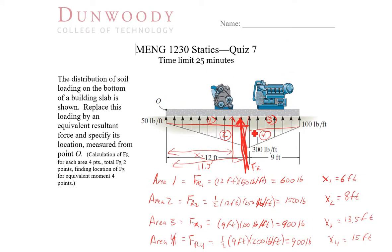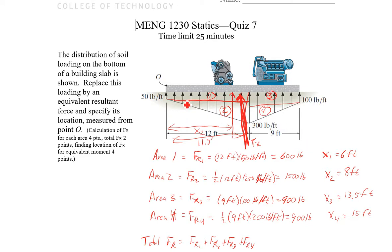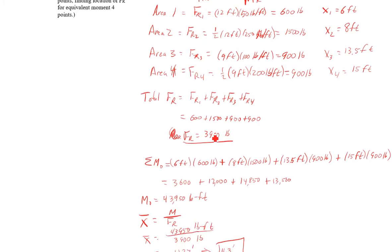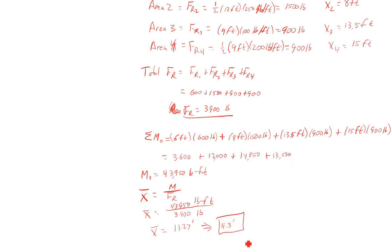So we found the area for each of these sections where we had a regular shape, whether it was rectangular or triangle, using those area calculations and the center of centroid calculation for our X position. And we could find our moments, divide our moment by our resultant force, which gets us a position for that resultant force to find the equivalent system.